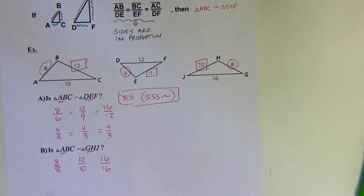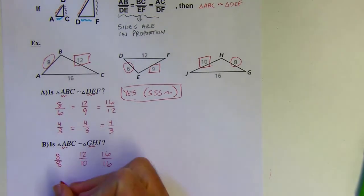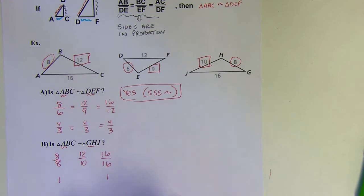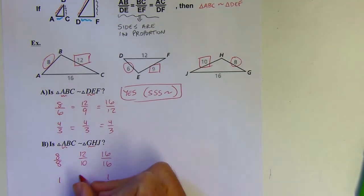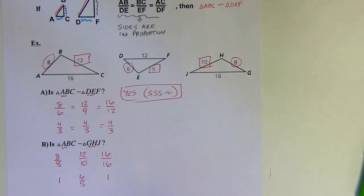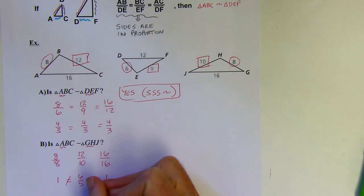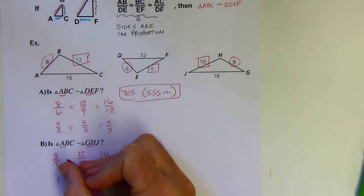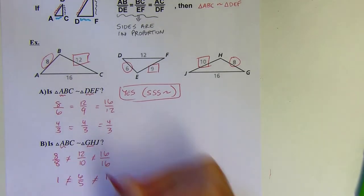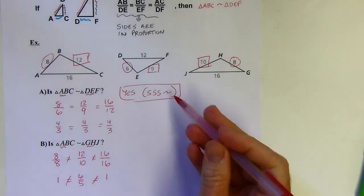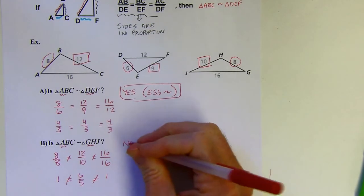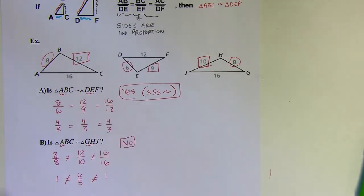So reducing these, 8 divided by 8 equals 1, and so does 16 divided by 16. But if I reduce this one, I'm going to get 6 fifths, or 1 and 1 fifth. And those are not all equal to each other. I've got two of the three that are equal, but they're not all in proportion. So that means I can't use SSS. So my answer, sadly, is no. They're not similar triangles.